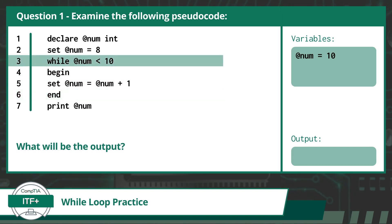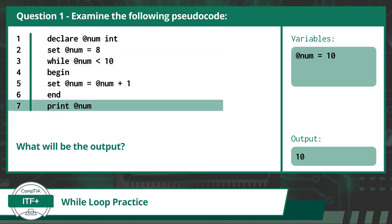Finally, we pop back up to the top of the loop to perform our condition check a third time. This time we see that @num is equal to 10, but no longer less than 10, so our condition evaluates to false. This causes our program to move to the next line of code after the while loop, which happens to be line 7. On line 7, our program prints out the current value of @num, which is now 10. So our answer to this question is 10.